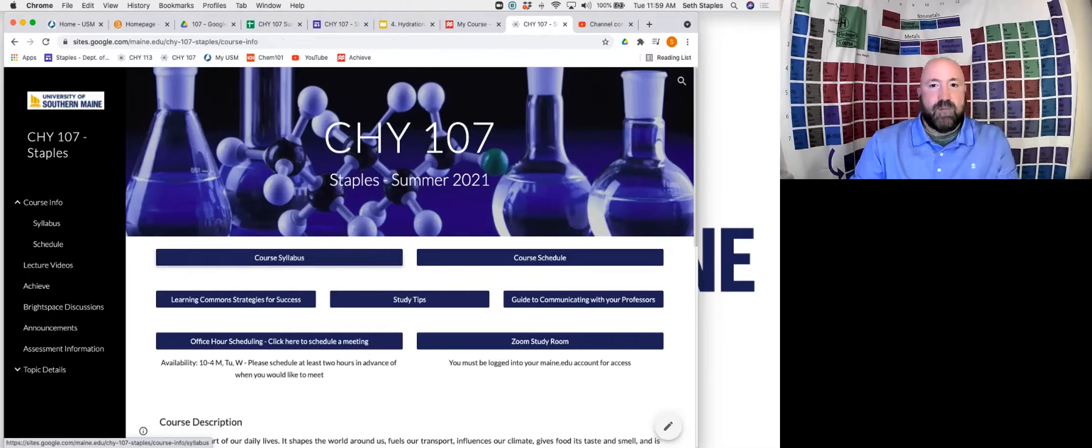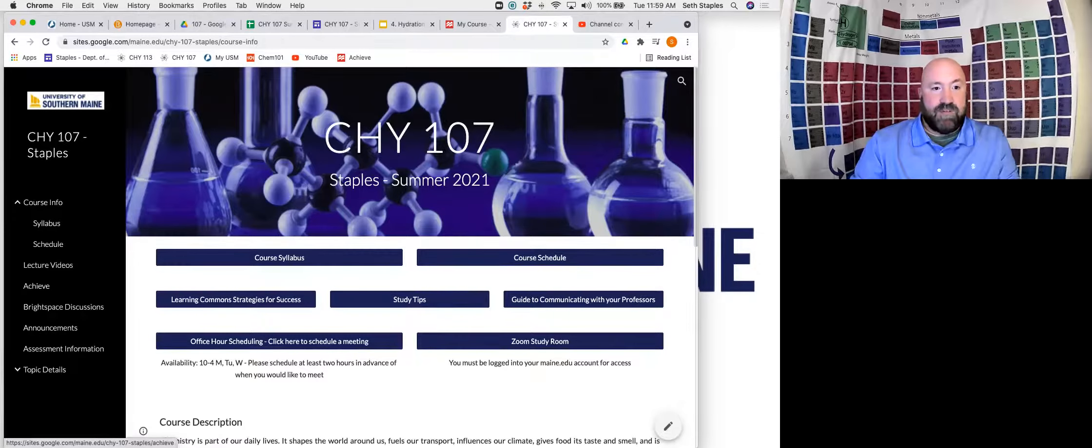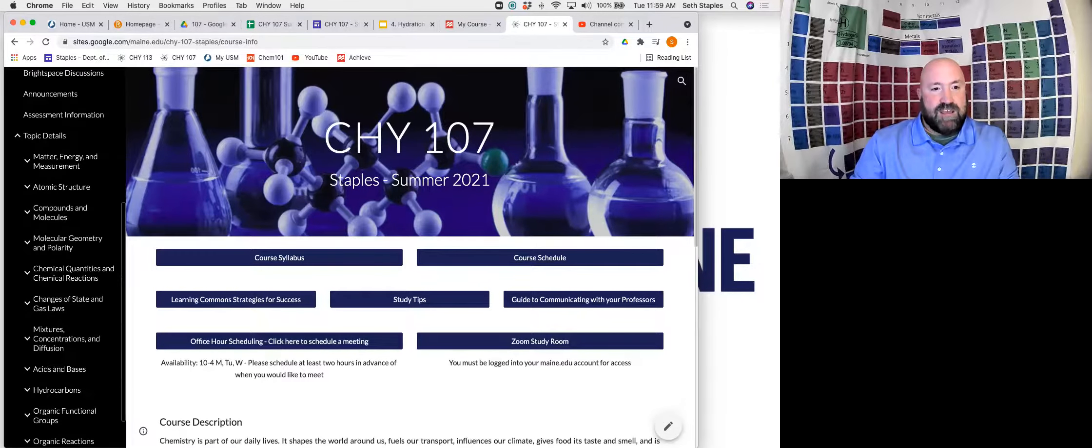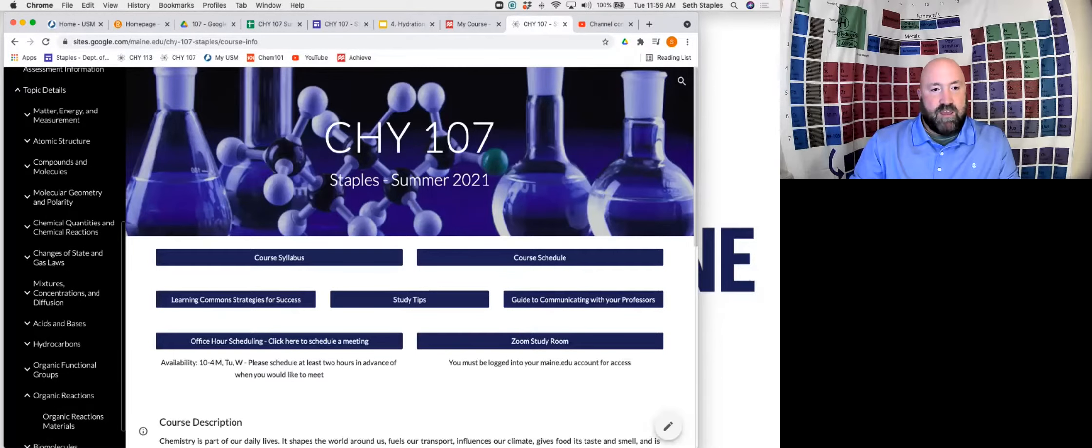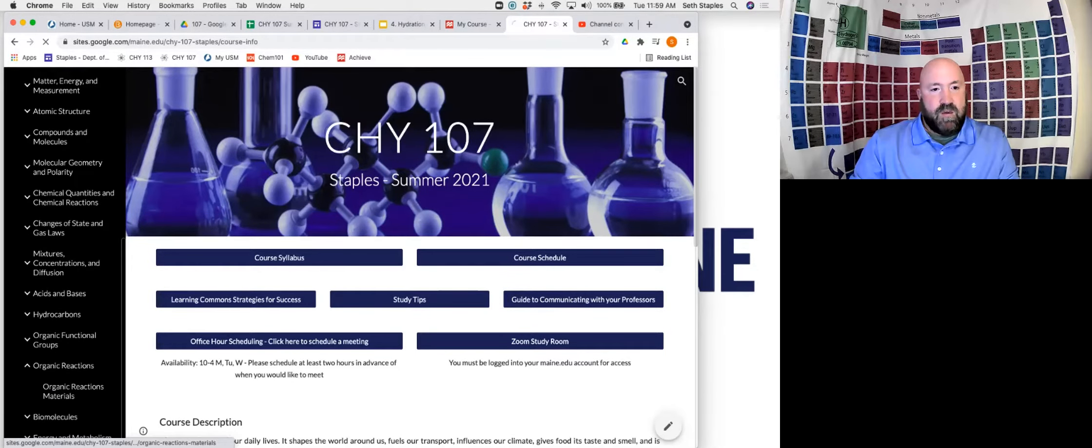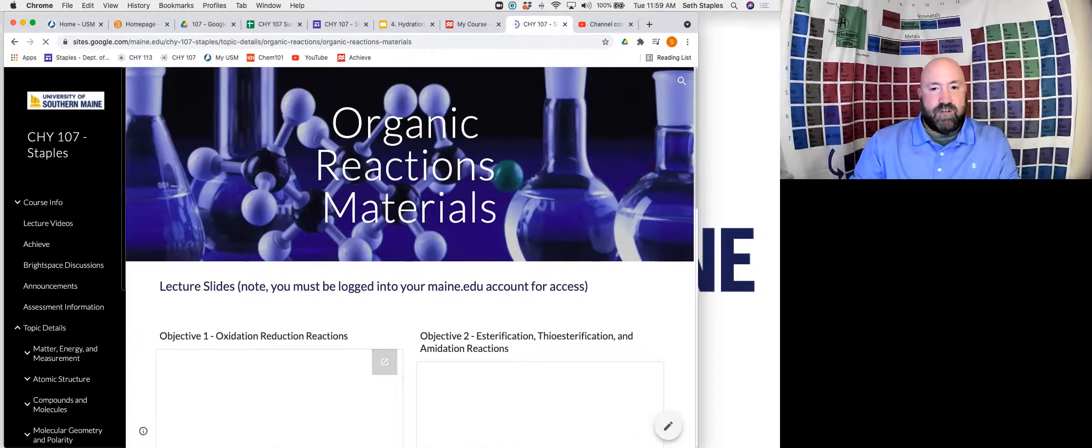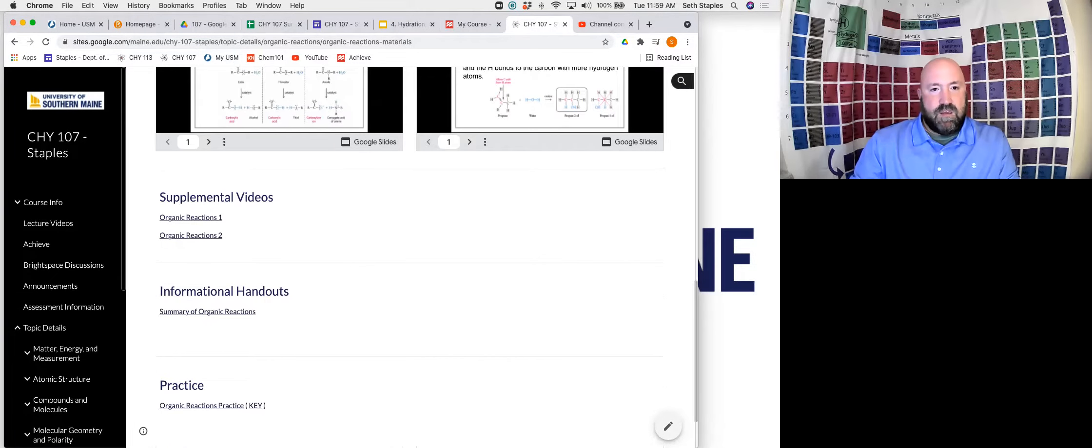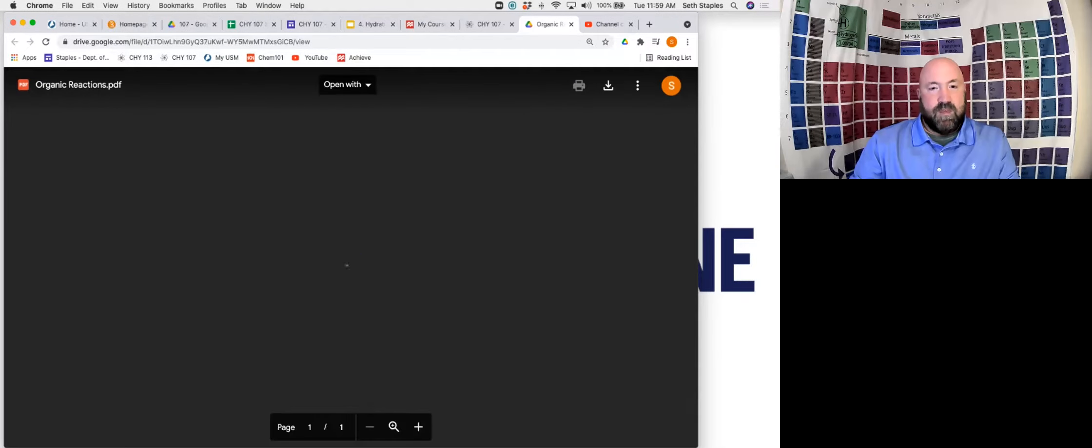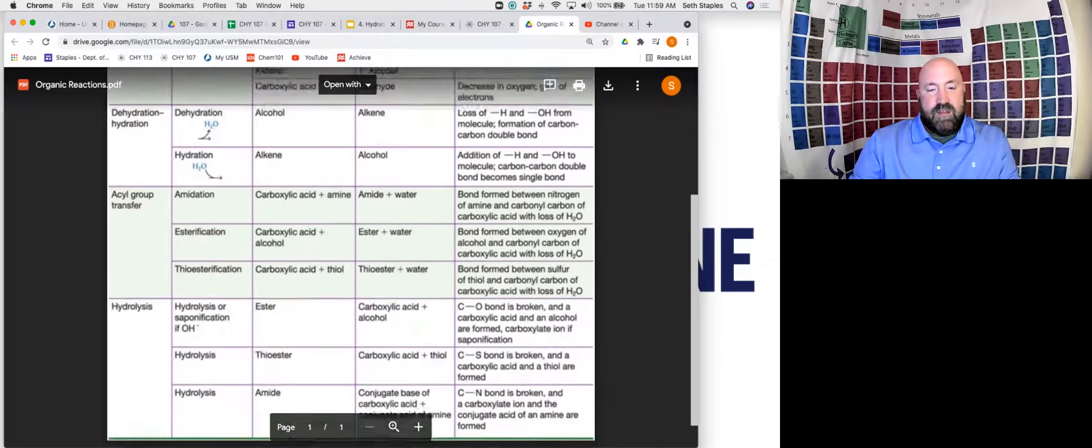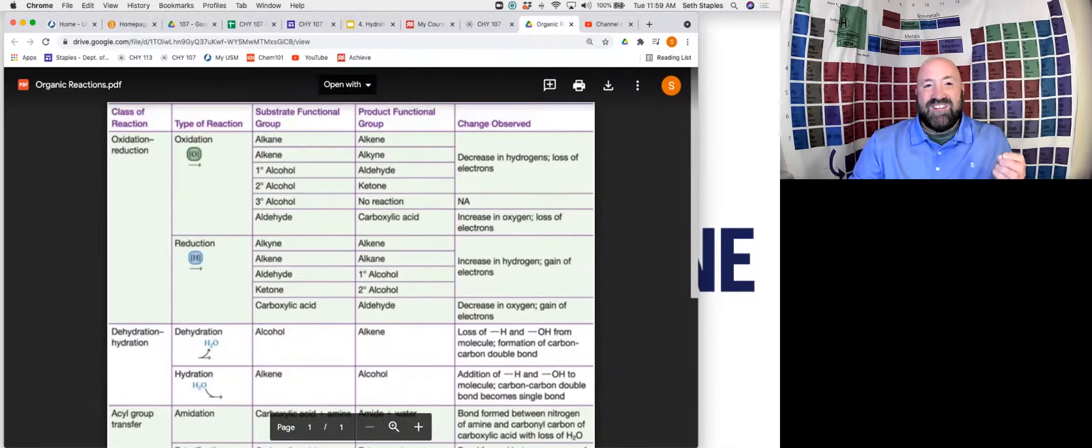Let's start from the front page of the website here. So here's again our front page of the website. Under topic details, we go to our organic reactions, which is what we're looking at now. Organic reaction materials. Here in informational handouts, summary of organic reactions. This handout provides a real nice summary for all the different reactions that we've looked at.